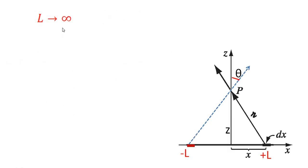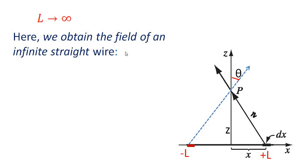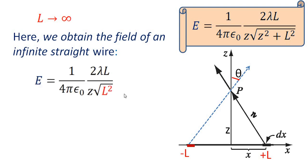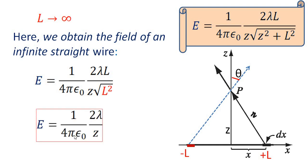If L tends to infinity, we obtain the field of an infinite straight wire. In that limit, z² + L² ≈ L², so sqrt(L²) = L, and this L cancels. Therefore E = (1 / 4 pi epsilon_0) × (2 lambda / z), which is the standard result for an infinite wire.